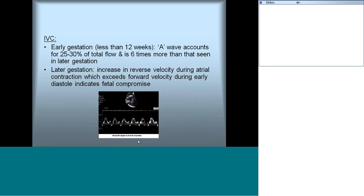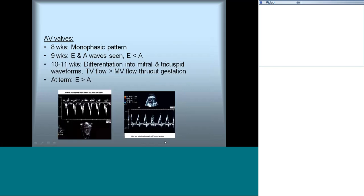The IVC Doppler is similar to postnatal IVC Doppler; however, early in gestation the A wave accounts for 25 to 30% of the total flow — you can see the X, V, and A waves. Later in gestation, if the A wave velocity is much increased during atrial contraction, it indicates the fetus is compromised. AV valve inflow patterns start as monophasic early in gestation, then develop separate E and A waves by around 19 weeks, where the E wave is less than the A wave in velocity. Tricuspid valve Dopplers have higher velocities than mitral valve inflow Dopplers, and this continues throughout gestation.